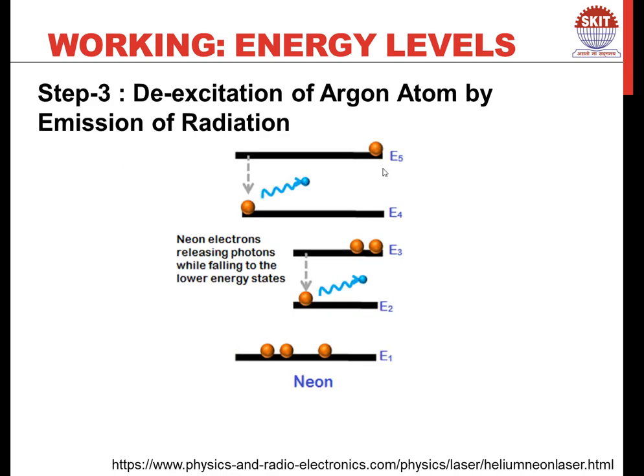Since E5 and E4 are metastable energy states, the neon atom makes a transition to a lower energy state, emitting certain photons. This is step three — emission of radiation from the neon atom. If this radiation falls under the visible spectrum, we get a visible laser, because these are stimulated emissions and the photons are coherent in nature.